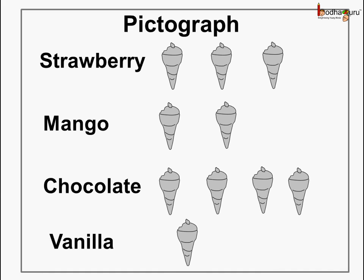You know what this is called? This is called a pictograph. Through pictures we are representing how many things are required — here, through the picture of a cone, we showed how many ice creams were required of each flavor: strawberry, mango, chocolate, and vanilla. So this way of representing data with the use of pictures is called a pictograph. Just by looking at the picture we can know, for example, how many wanted mango ice cream — two children. How about chocolate? One, two, three, four — four children wanted chocolate ice cream.